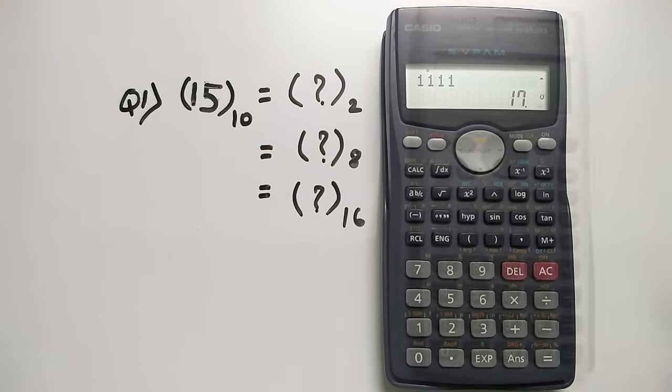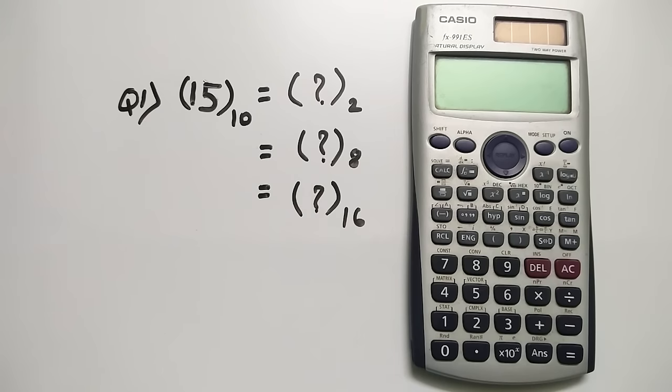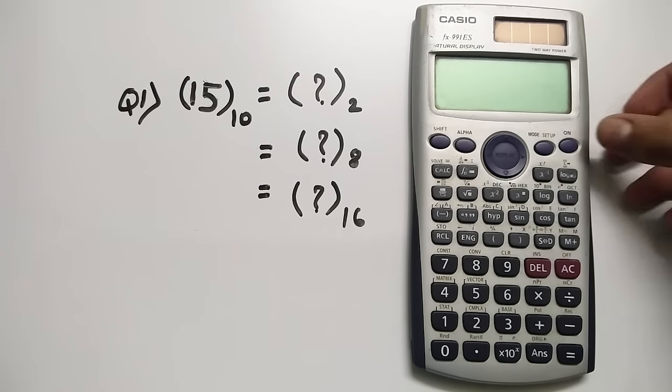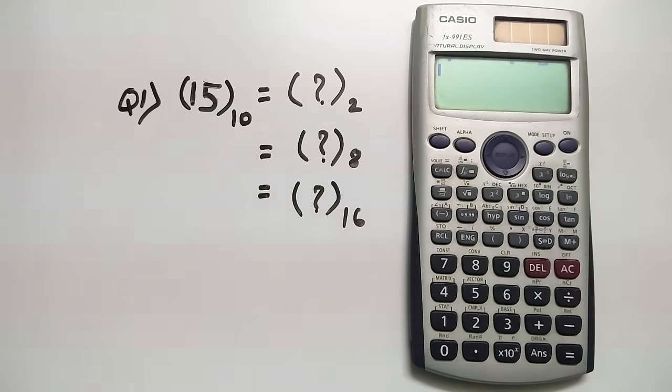Okay so as you can see now I have the Casio 991 ES model. The process over here is also pretty similar but just to give you a demonstration. Again over here currently we just need to first set our calculator to the base mode. So click on the mode and you can see option number four which represents base.